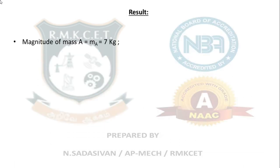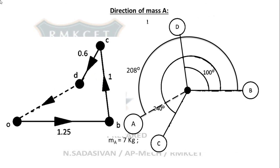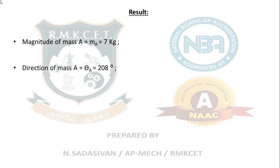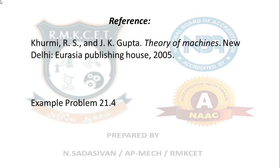That completes the problem. Summary of results: magnitude of mass A = 7 kg; direction of mass A = 208°. All angular positions must also be listed as answers since they were not given in the question. Included angle B–O–C = 100°, B–O–D = 240°, B–O–A = 208°. These are all the results. This problem is taken from Kurmi textbook, Problem 21.2, and has appeared many times in university exams.